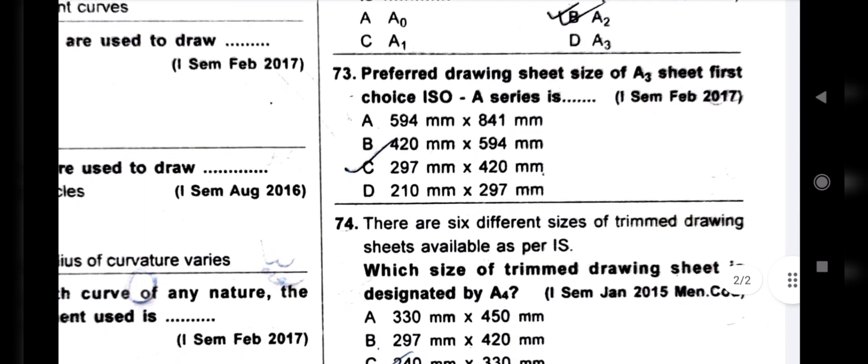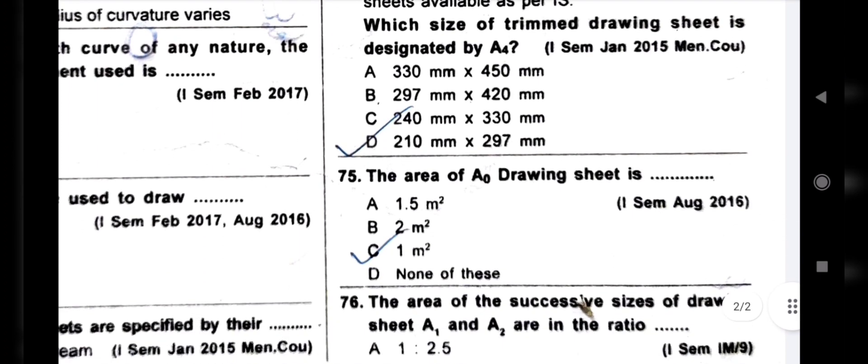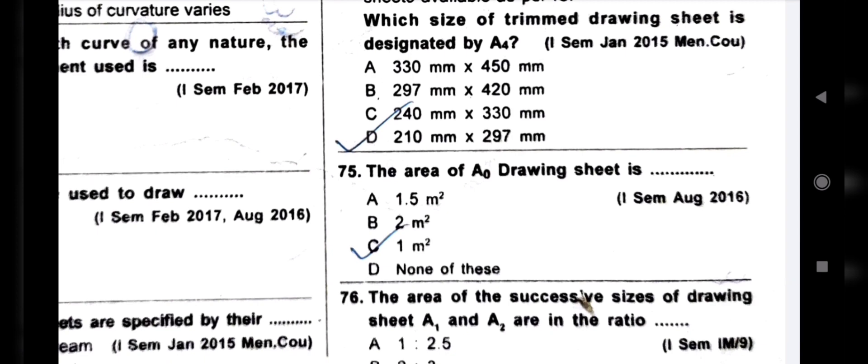Next question: the preferred drawing sheet size of A3 sheet in the ISA A-series is 297 mm x 420 mm — both important questions. Next question: which size of trim drawing sheet is designated by A4? The A4 drawing sheet designation is 210 mm x 297 mm.